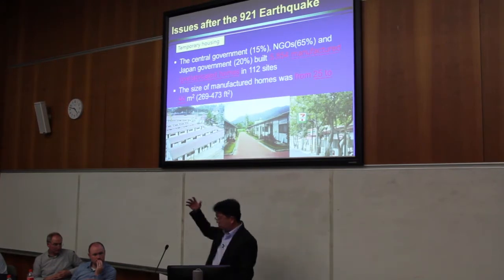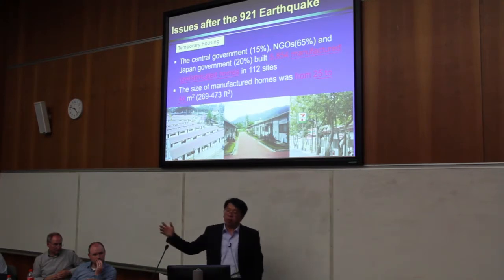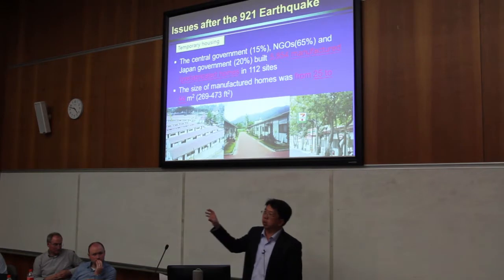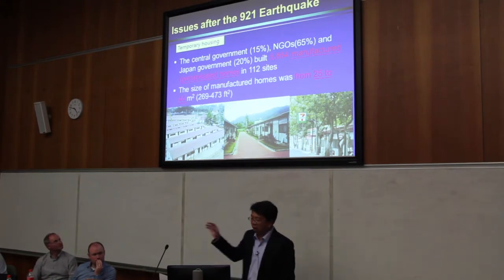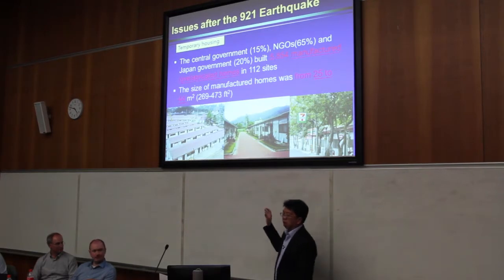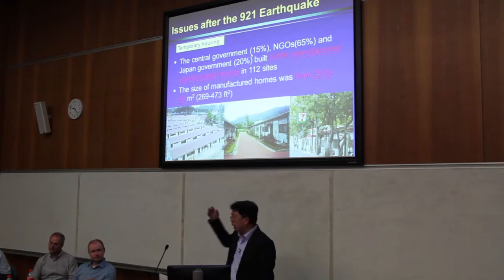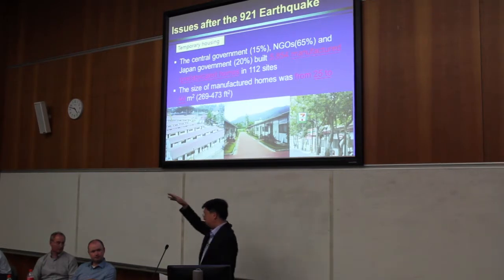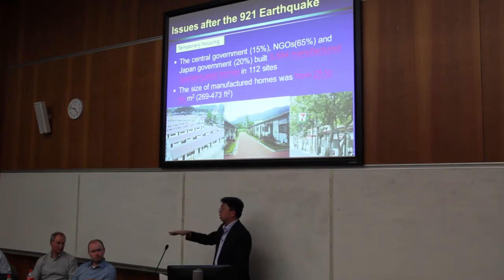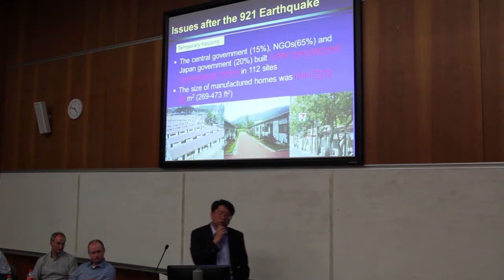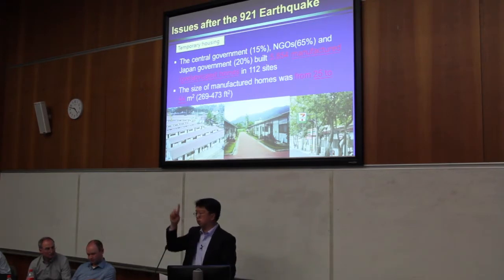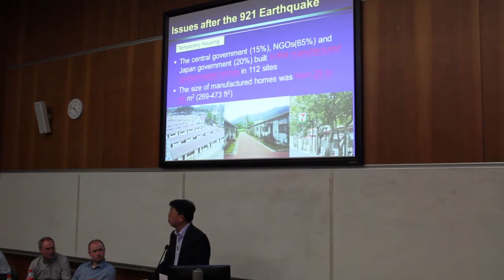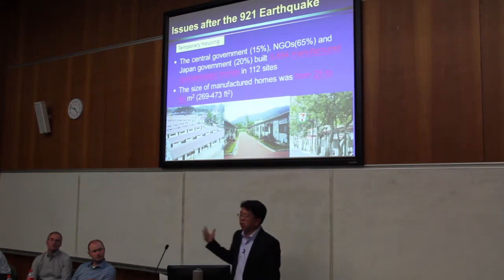The major policy was to try to recover in-site because it happened in the rural area where there was not enough rental housing. Many people were settled in temporary housing, basically provided by the central government. There are three levels of authority: central government, city and county government, and township government. I should mention that in the 921 earthquake in Taiwan, we only had 1% housing insurance at that time, and most insurance was on commercial buildings, so basically there was no insurance for residents to rebuild — the money they could use was their savings.